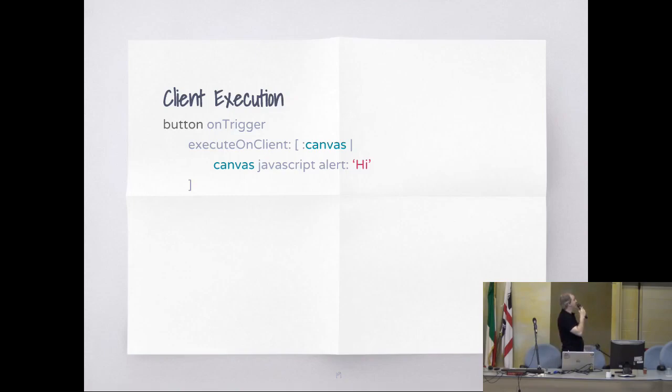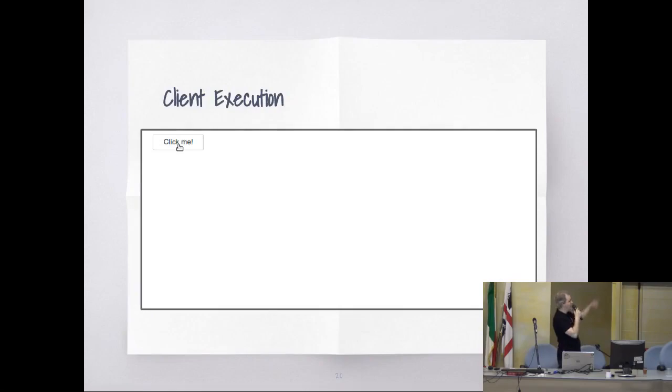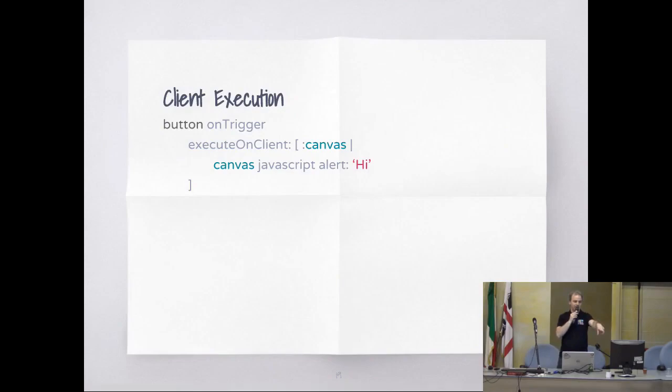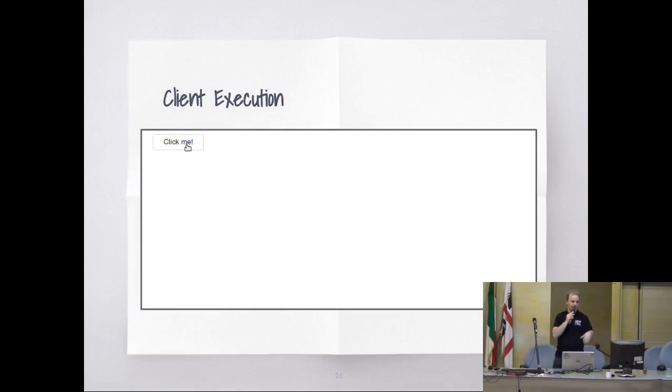We'll start with the most basic affordance — this will just do some JavaScript and not go to the server. This code says: on trigger, execute on client, and show an alert. So when I click it, I will get an alert.